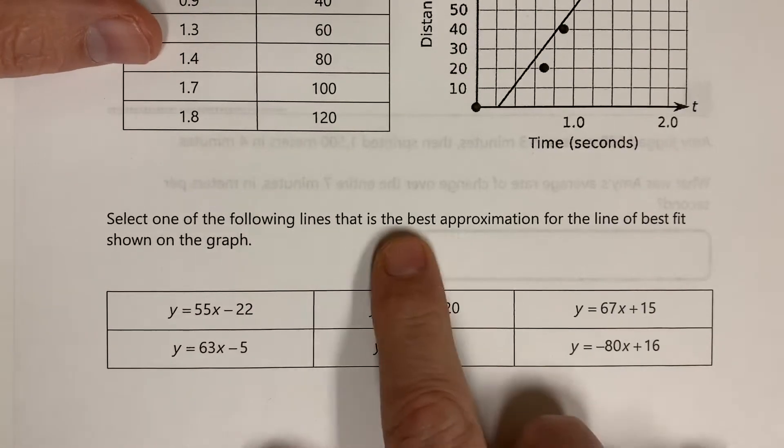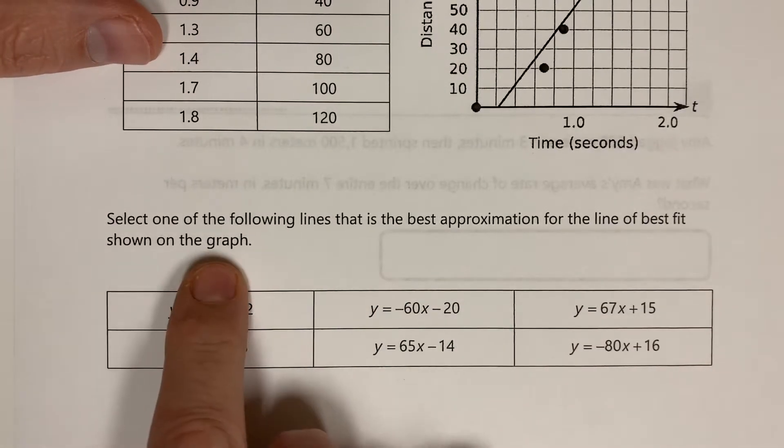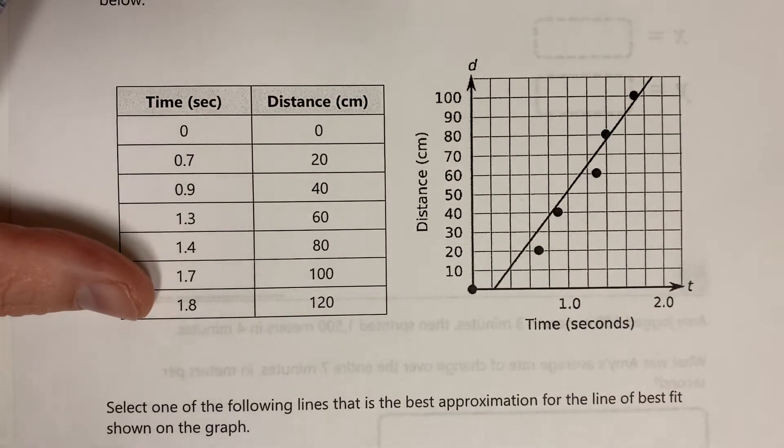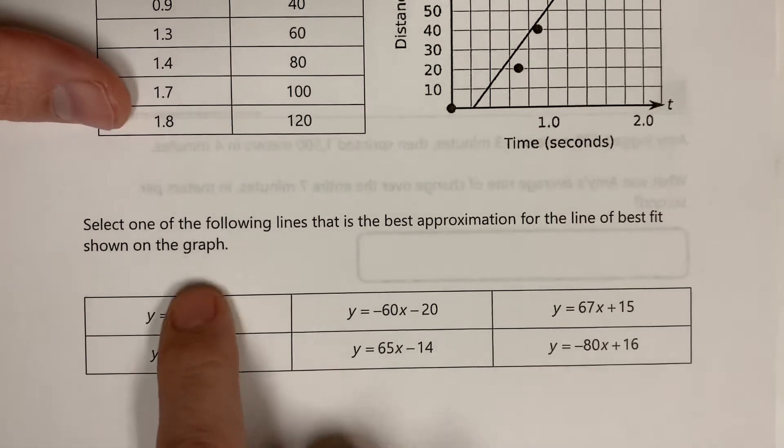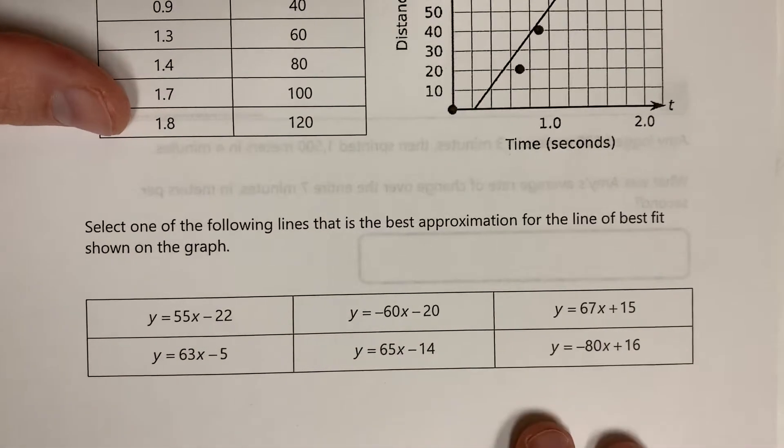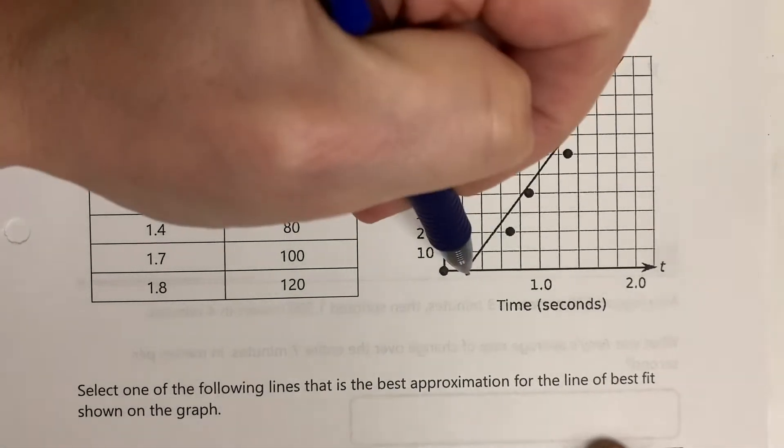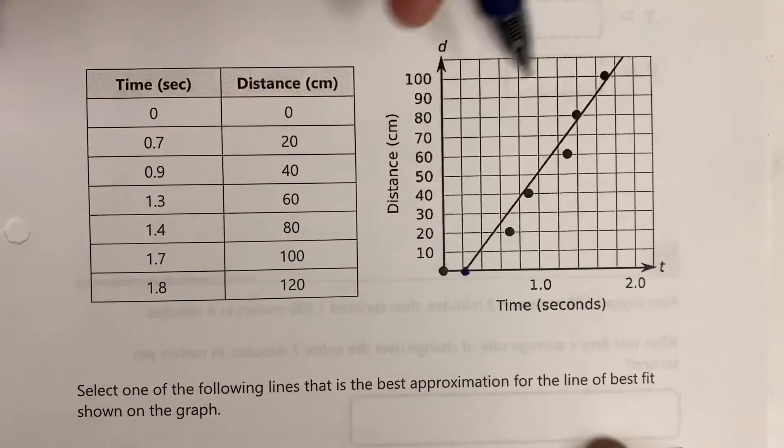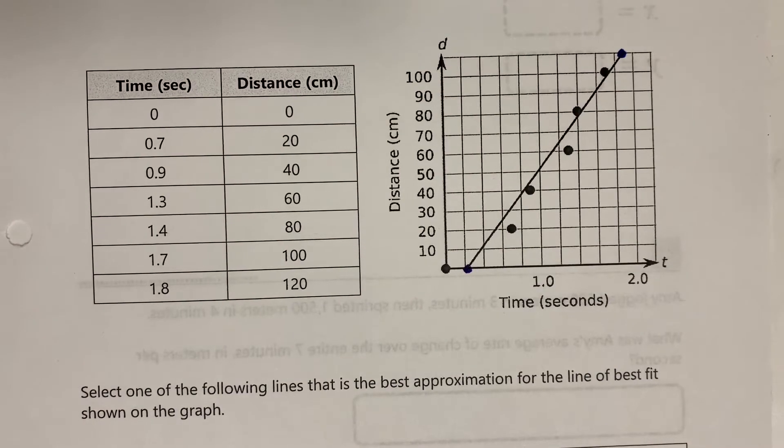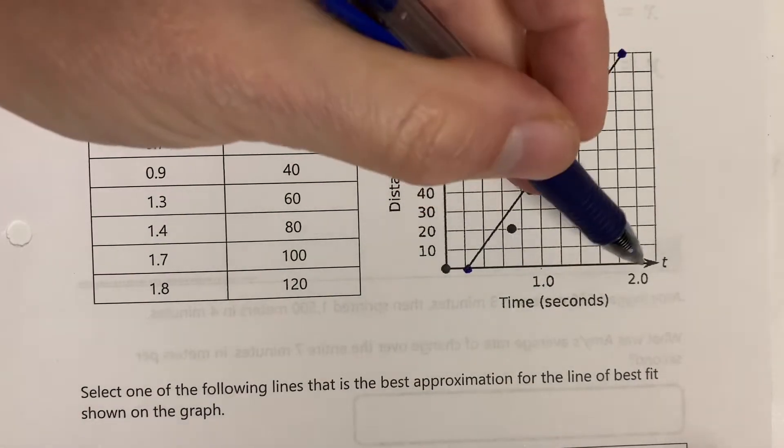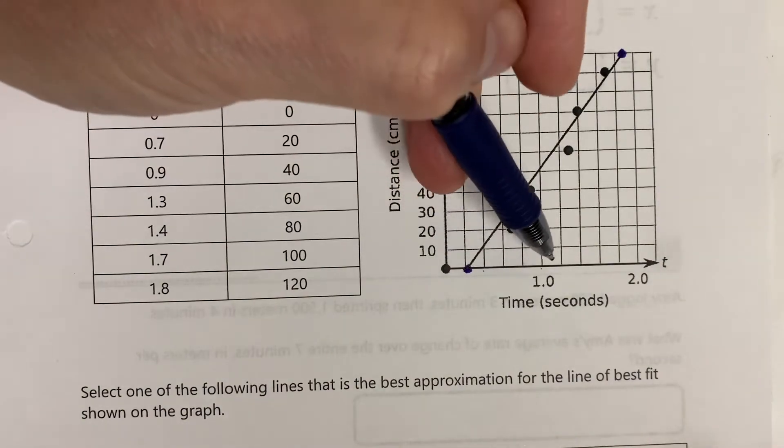On the bottom it says select one of the following lines that is the best approximation for the line of best fit shown in the graph. I know what it was because I made this and I just had to kind of round the numbers a little bit. So how do I actually achieve that? Well, one way I can do it is I can take a look at this point here and this point here, the ends of the regression line, and estimate those two points.